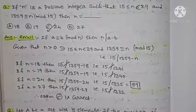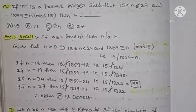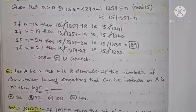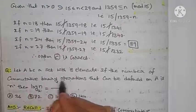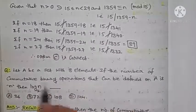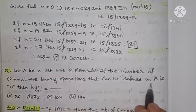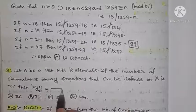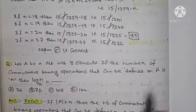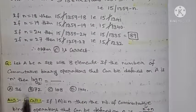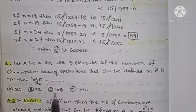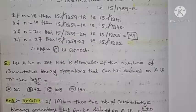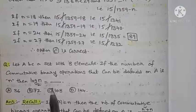Now moving to the next question, question number 29. The question is: let capital A be a set with 8 elements. If the number of commutative binary operations that can be defined on capital A is N, then we have to find log N base 2. The four options are: option A is 36, option B is 72, option C is 108, and option D is 144.